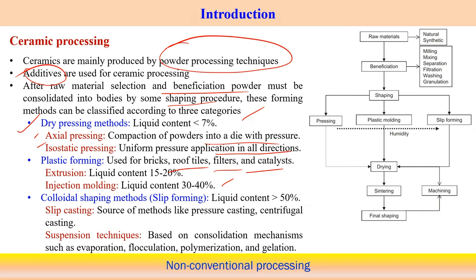Colloidal shaping methods, also called slip forming, have liquid content greater than 50 percent. This includes the slip casting process — such as pressure casting and centrifugal casting — and suspension techniques. Suspension techniques are based on consolidation mechanisms such as evaporation, flocculation, polymerization, and gelation. These different procedures ensure consolidation happens in different ways.